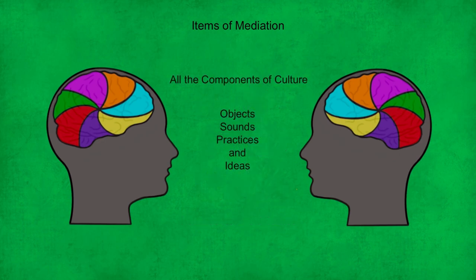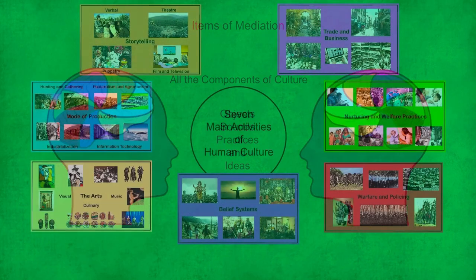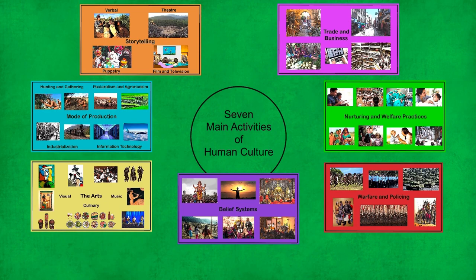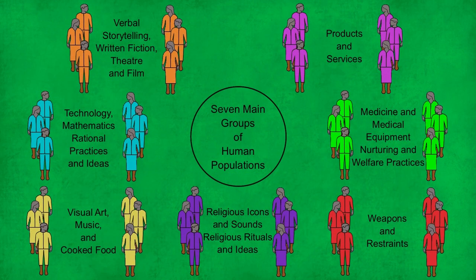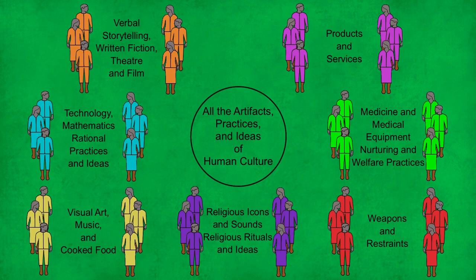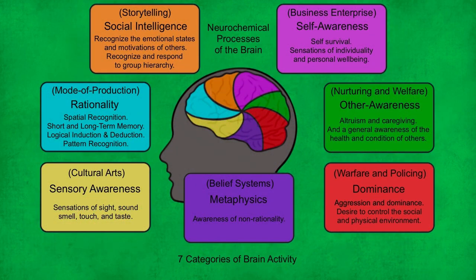Items of mediation are an important part of the computer simulation and we'll look at them in more detail when we're running the simulation. To quickly summarize: the seven main activities of human culture are a consequence of the activities of seven main groups of human populations, who create and use specific items of mediation to stimulate their preferred neurochemical processes, creating all the artifacts, practices and ideas of human culture. These groups form as a natural consequence of the seven key neurochemical processes of the human brain and the preference every individual has to stimulate one area more than the others. That's all you'll need to know to follow stage one of the simulation, so let's return to it.